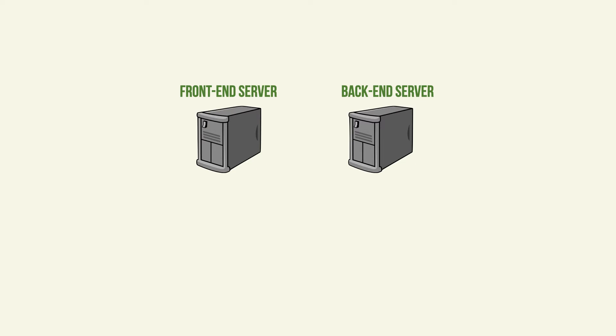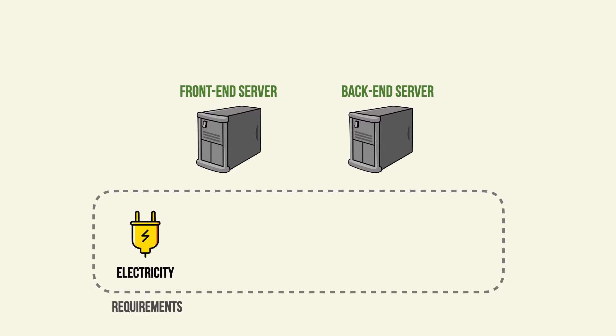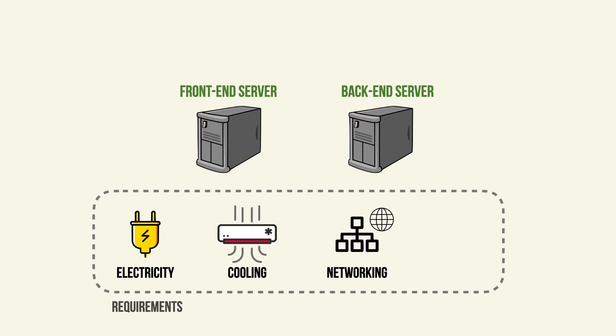So you will need to find two physical computers or servers to run your front and back-end code. This is the approach that was traditionally taken, where you literally go and buy two physical computers or servers and place them in your startup office. You need to supply them with electricity, some cooling, basic networking, an internet connection, and some office space.